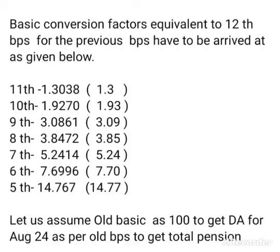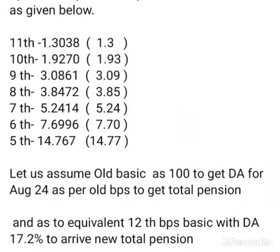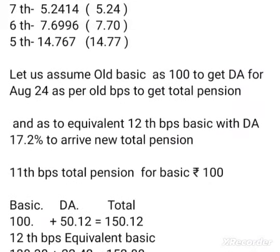Friends, you can see: 11th BPS factor is 1.3, 10th is 1.93. You can share this video so that it can reach all respected senior pensioners. 9th BPS factor is 3.08, 8th is 3.85, 7th is 5.24, 6th is 7.70, and 5th is 14.77.